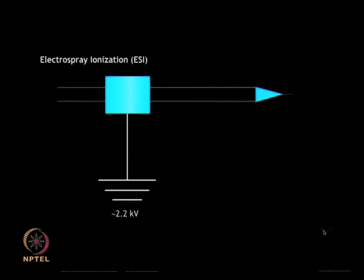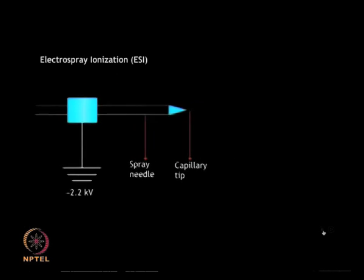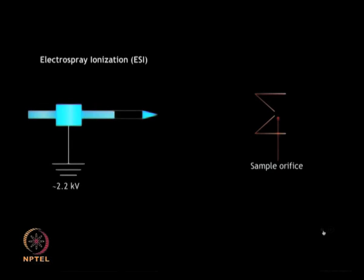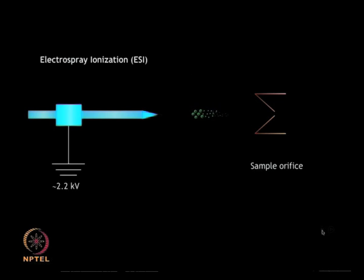In electrospray ionization, the sample is present in liquid form. Ions are created by spraying a dilute solution of the analyte at atmospheric pressure from the tip of a fine metal capillary, creating a mist of droplets. The droplets are formed in a very high electric field and become highly charged. As the solvent evaporates, the peptide and protein molecules pick up one or more protons from the solvent to form charged ions, which are then accelerated towards the mass analyzer depending on their mass and charge.